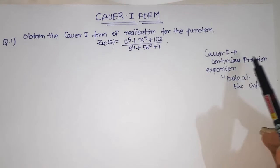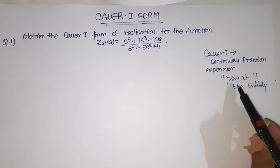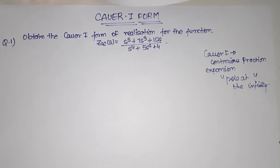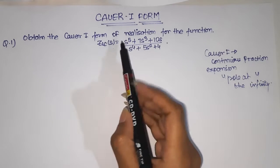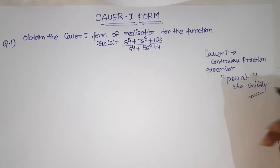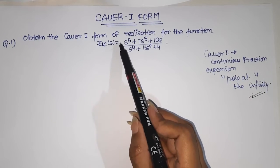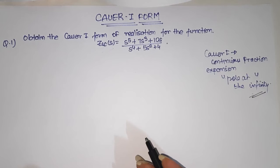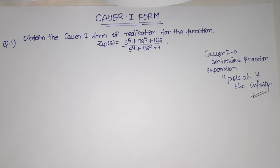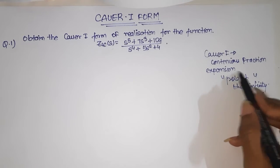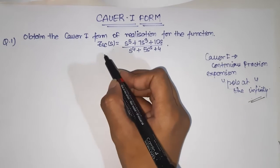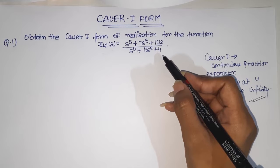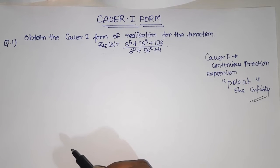The first step is continuous fraction expansion about the pole at infinity. Always remember that we can obtain the Cauer 1 form when we do fraction expansion of our Z function about the pole at infinity. When the degree of numerator is less than the degree of denominator, there is a presence of zero at infinity, so we need to find the admittance function Y(s) = 1/Z(s), because that has a pole at infinity, and then we do the fraction expansion.